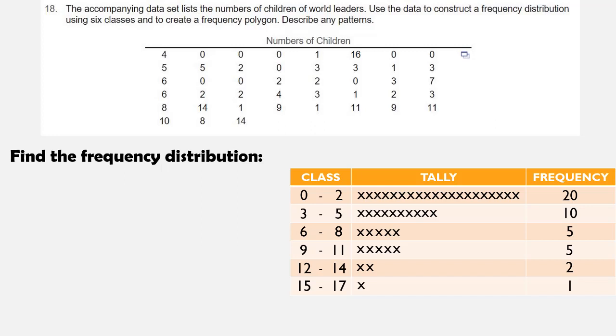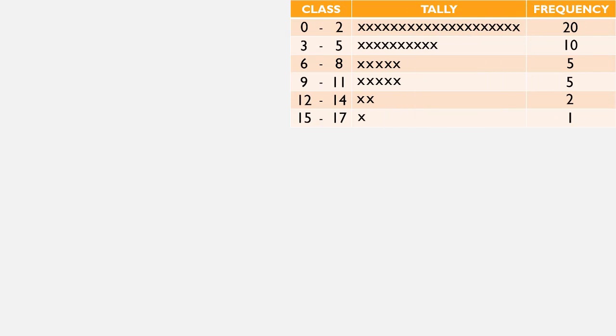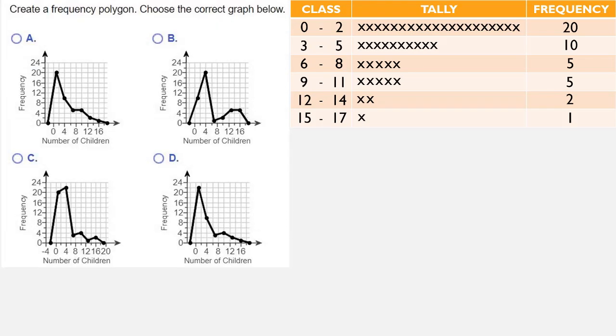Now we want to construct a frequency polygon. So let's keep our frequency distribution in the upper right-hand corner. And we have some choices for the frequency polygon. The very first class should be the highest point on the graph. So that eliminates graph C because its second point is the highest, not the first. So immediately, graph C is out.